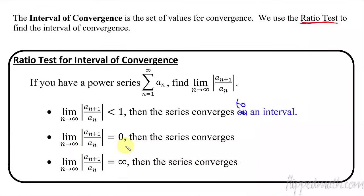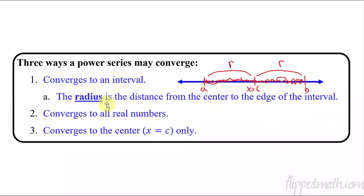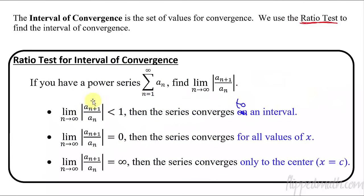If this thing goes to 0, then the series converges for all values of x. If you do the ratio test and that limit equals 0, then it's converging from negative infinity to infinity. And then if the limit for this ratio test equals infinity, then the series is converging only to the center, x equals c. So these are how we identify where the interval of convergence is.